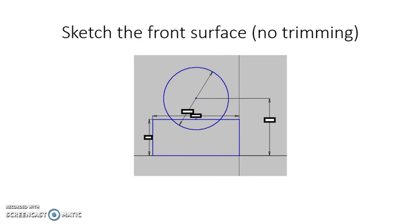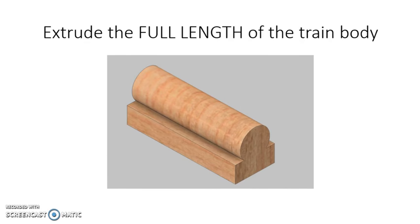Let's start off by sketching the front surface. There's no trimming involved with this. When you start trimming things out, you have to add in extra dimensions or extra constraints to get things to line up. So with just the dimensions that I have there, I've managed to make this front surface, which is just a combination of a rectangle and a circle. After you fully constrain that and finish your sketch, you're able to extrude the full length of the train body. And when I say extrude the full length, I mean the entire depth, including that part where the engineer sits in the back of the train.